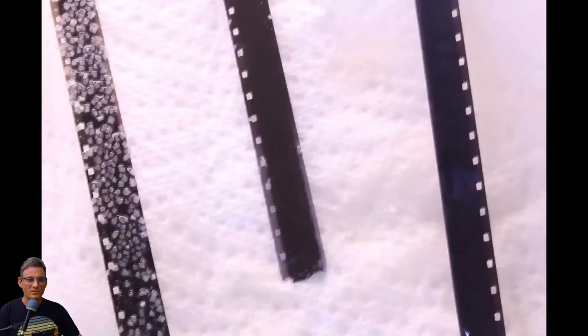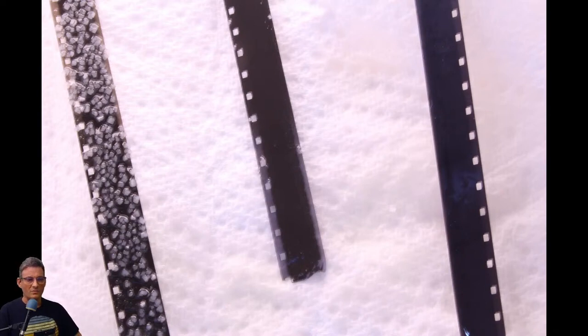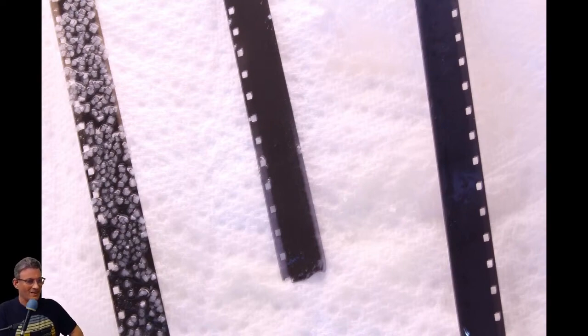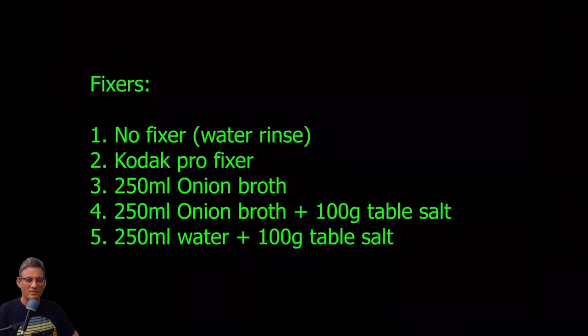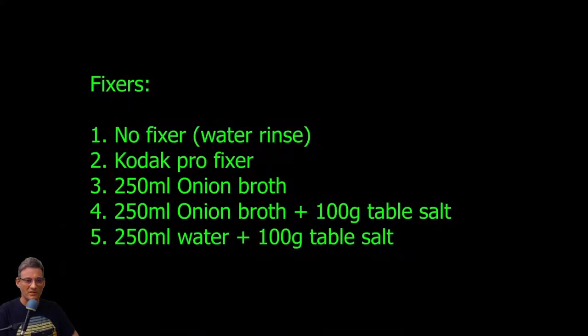And after 24 hours, I took them out and look at this. So anyway, that one on the left is the onion with salt water. The one in the middle is just salt water. And the one on the right was just onion broth. Okay, so here are some results. That was the entire results strip there. So these are the fixes again, 100 grams per 200 mils, 100 grams salt. So these are the fixes again.